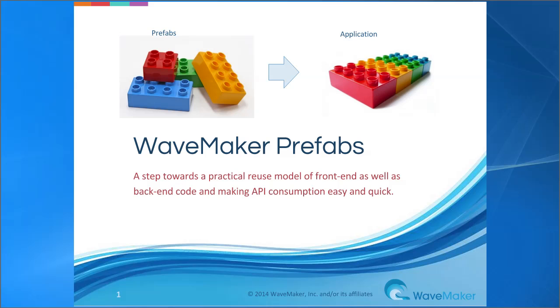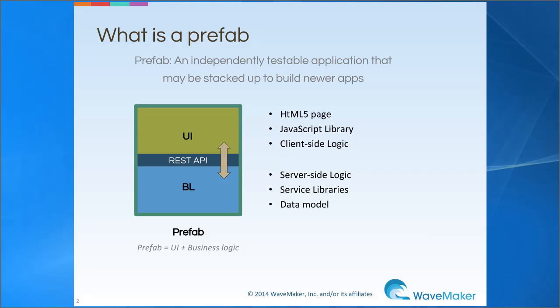They can be configured either through the properties they expose or through code. A prefab is an independently testable application that can be stacked up to build newer apps. It consists of a user interface which implements client-side logic and a business layer which implements the server-side logic. These two components are connected via REST API calls.